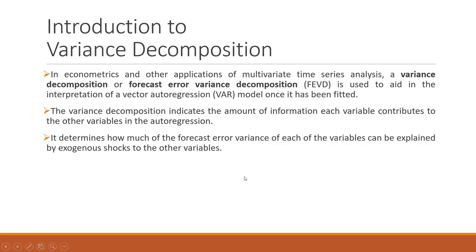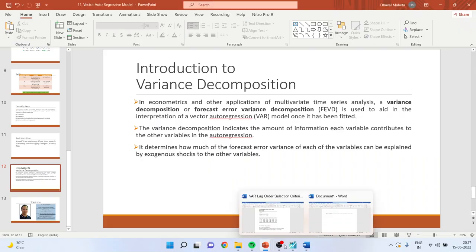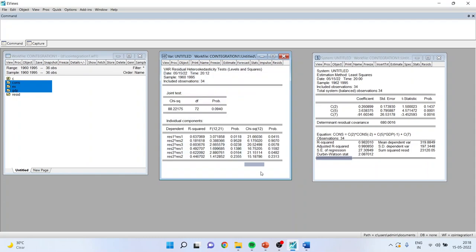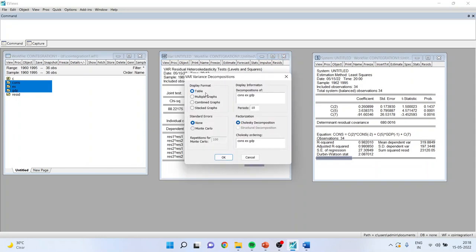The next step is variance decomposition. In econometrics and multivariate time series analysis, a variance decomposition — or forecast error variance decomposition — is used to aid interpretation of a fitted VAR model. It indicates the amount of information each variable contributes to the other variables in the autoregression, and determines how much of the forecast error variance of each variable can be explained by exogenous shocks to the other variables.